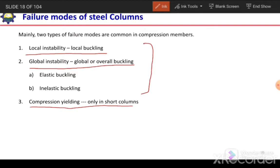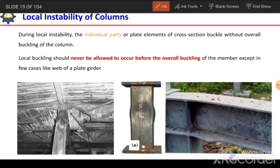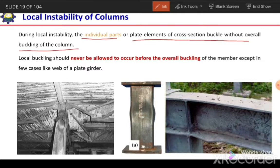In the next slide we will discuss one by one what these failure modes are — local buckling and overall buckling. During local instability or local buckling, individual parts or plate elements of a cross section buckle without overall buckling of the column. The plate elements are the local parts of the section that buckle without the overall buckling of the member. So the overall member will not buckle, but some part will buckle.